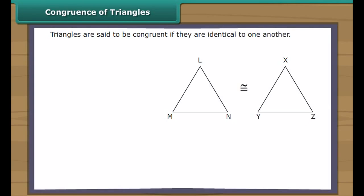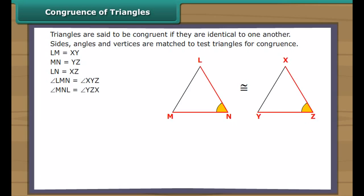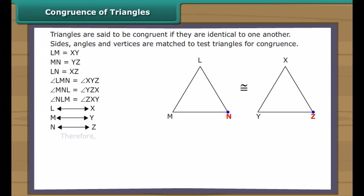Congruence of triangles. Triangles are said to be congruent if they are identical to one another. Sides, angles, and vertices are matched to test triangles for congruence. Side LM equals side XY, side MN equals side YZ, side LN equals side XZ. Angle LMN equals angle XYZ, angle MNL equals angle YZX, angle NLM equals angle ZXY. Vertex L corresponds to X, vertex M to Y, vertex N to Z. Therefore, triangle LMN is congruent to triangle XYZ.